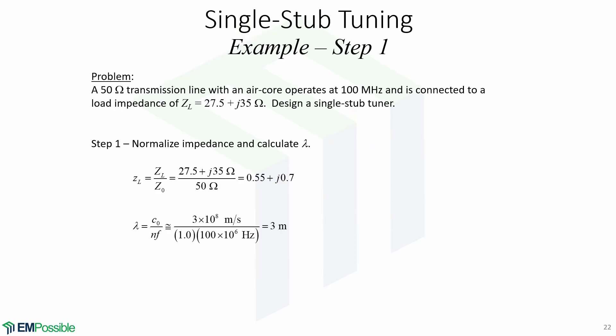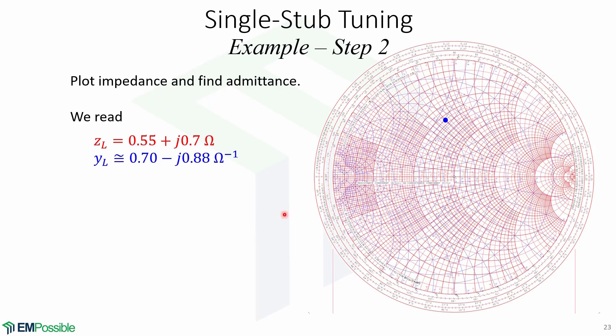Here is an example for single stub tuning. A 50-ohm transmission line with an air core operates at 100 megahertz and is connected to a load impedance ZL = 27.5 + j35 ohms. Design a single stub tuner. The first step is to normalize impedance and calculate the wavelength. The normalized impedance is given by this and the wavelength is 3 meters. We will use the combined impedance and admittance Smith chart for this example. The next step is to plot the impedance and find the admittance — we read that the admittance is 0.70 − j0.88.